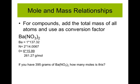So if we had 395 grams of barium nitrate, we could figure out how many moles that was because we know each mole is 261.27 grams. Starting with 395 and dividing by 261.27 gives us about 1.51 moles of barium nitrate.